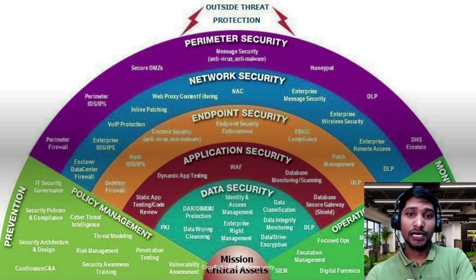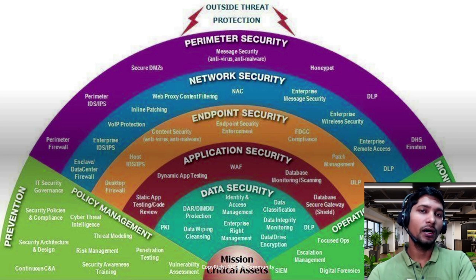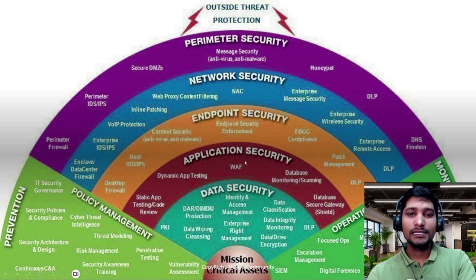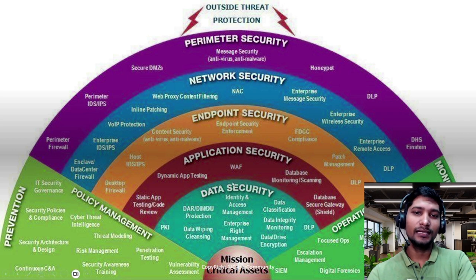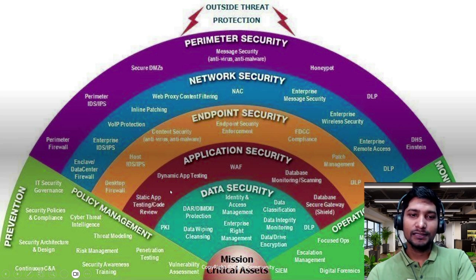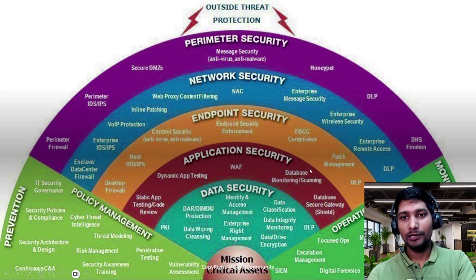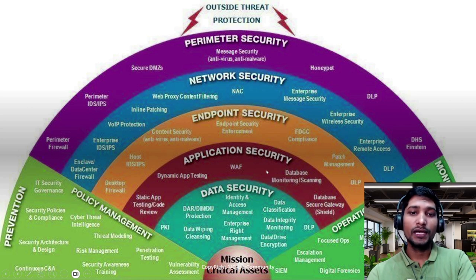Now, application security — for example, your website or your API. A WAF (web application firewall) is one of the most important tools here; it stops malicious traffic towards your application or API. There are rules related to OWASP Top 10, dynamic app testing (DAST), SAST (static application security testing), and secure code review at the software level, as well as database monitoring, scanning, and database security gateways.